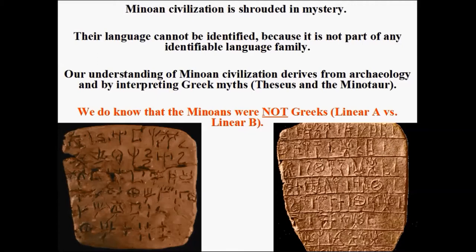A little later on, we'll be looking at a derivative script known as Linear B, which has been found to be the earliest form of Greek. Linear A, which is believed to have been used by the Minoans, has not been deciphered and we don't know what linguistic family the Minoans belong to, while Linear B has been defined as the earliest form of Greek.